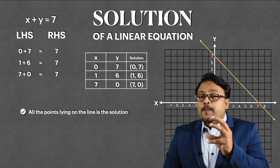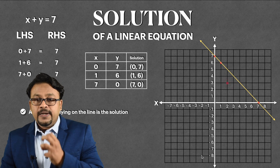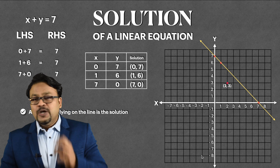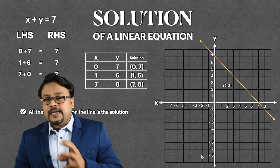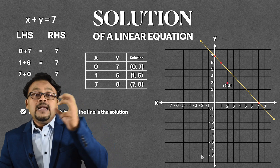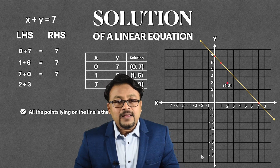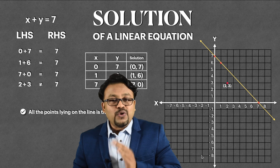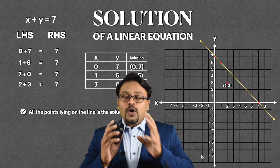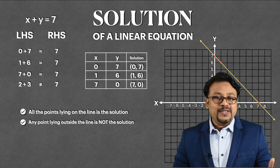Remember this: all points lying on the line are the solution of your equation. Now let's take a point outside the line — for example, the point where X coordinate is 2 and Y coordinate is 3, so (2, 3). We can check that it is not a solution. We substitute on the left hand side: 2 plus 3 equals 5, which is not 7. So LHS is not equal to RHS, meaning (2, 3) is not the solution. The conclusion is: if a point lies outside the line, it cannot be the solution.